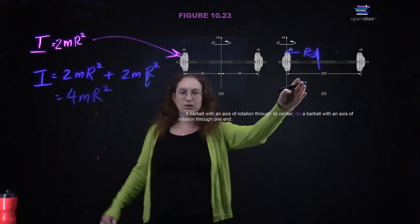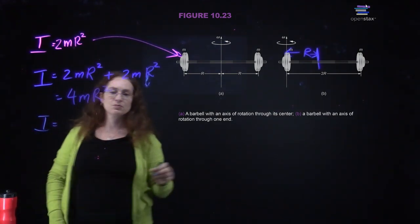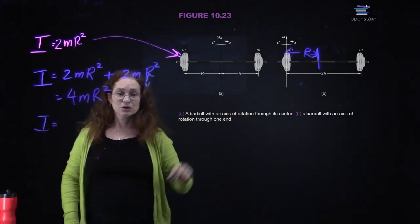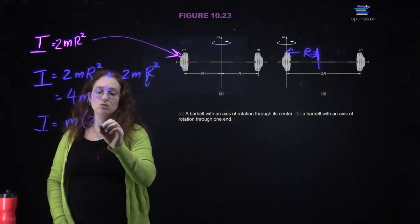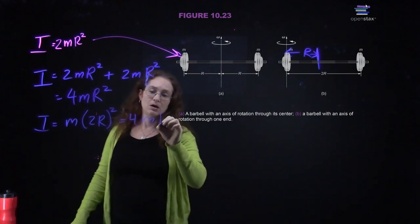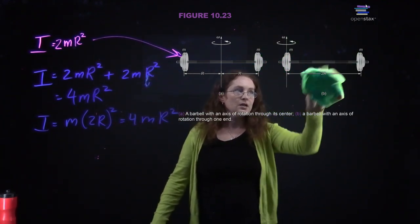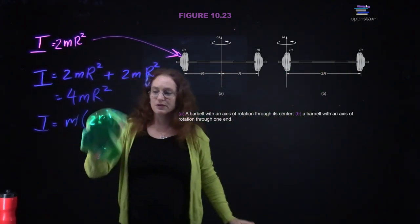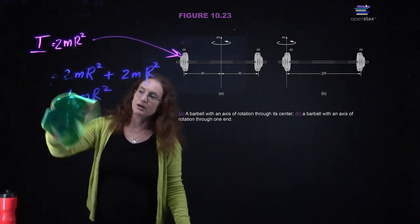Of course, I can also calculate this the same way as before, treating it as two point particles. This first mass has a radius of zero from the axis of rotation, so it contributes nothing. The second mass contributes m times (2r)², or 4mr². So I solved this problem in two different ways and got the same answer.